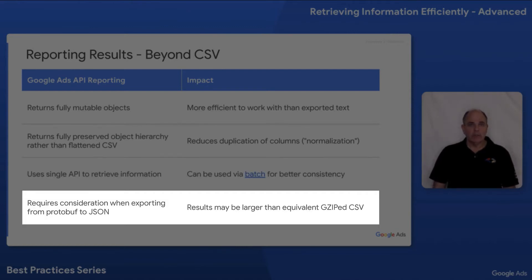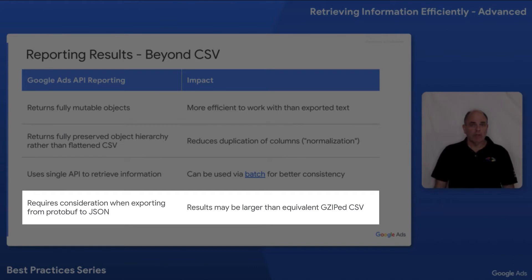When using the client libraries — with the sole exception of Perl — the transfer is via the highly efficient protobuf format. However, if you are exporting to JSON, the results may be larger than the equivalent gzip compressed CSV.